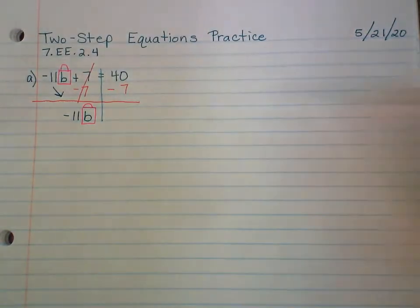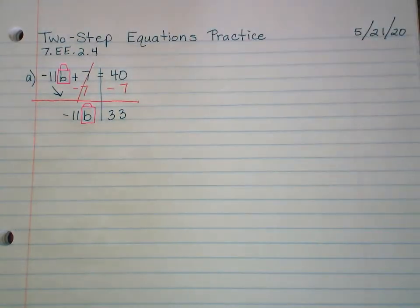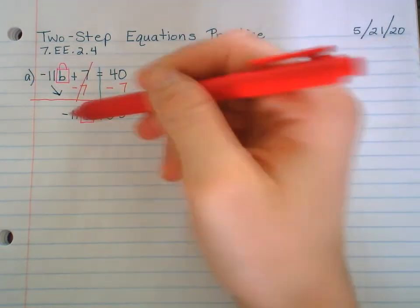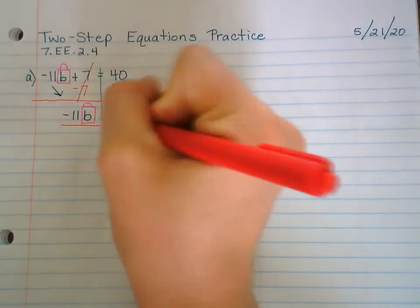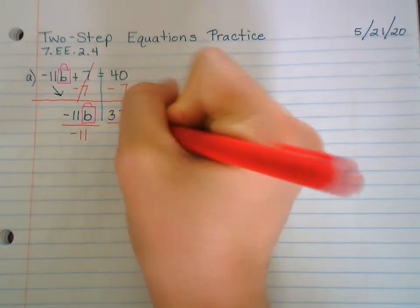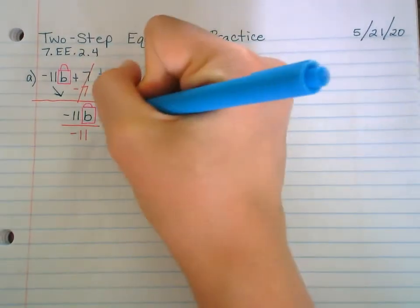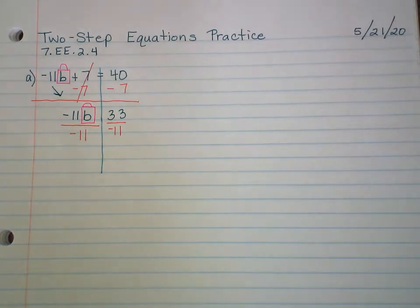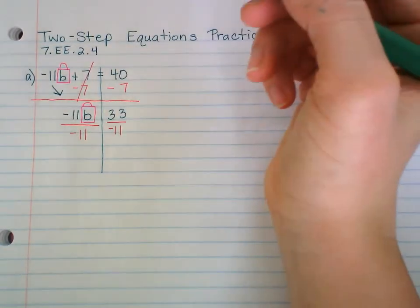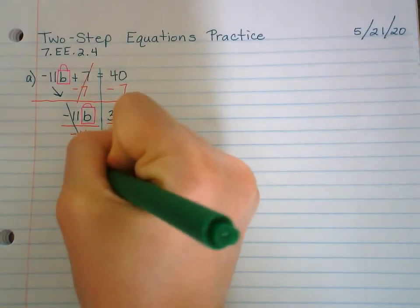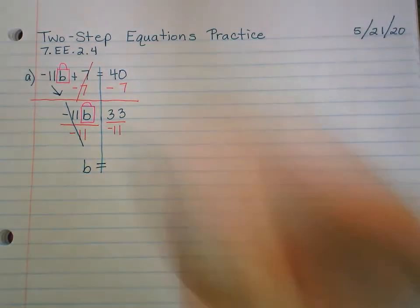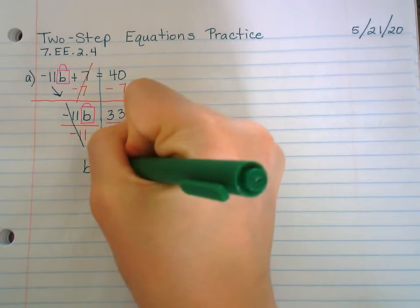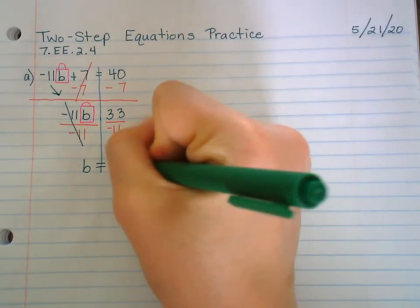This is a two-step equation because they consider the first step when you combine like terms, when you get the constants together. We got to get the constants together first. This positive 7 needs to be over there. So you subtract 7 from both sides. 7 minus 7, it goes away. You got to bring down the -11 with the B. Don't just write down B. It's -11 with the B. There's going to be another step. That's why it's two-step. Now, 40 minus 7 is 33.